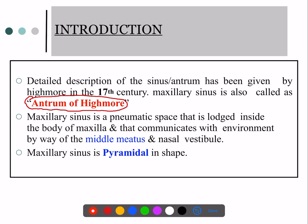The maxillary sinus opens into the middle meatus. It is an air space present in the maxilla that communicates with the environment outside, mainly through the middle meatus — the opening of the maxillary sinus is present in the middle meatus.